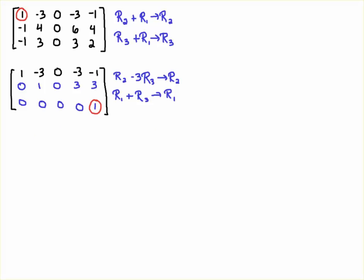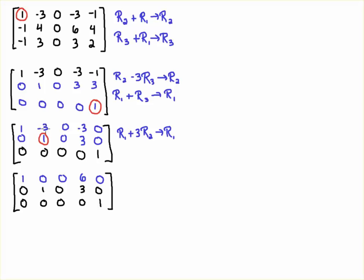So when I perform those operations we get the following matrix and then to finally get down to row reduced echelon form I'm going to eliminate this minus 3 by adding 3 times row 2 plus row 1. And when I do that of course we get a 0 in this top entry here. 3 times 3 is 9 plus minus 3 is 6.